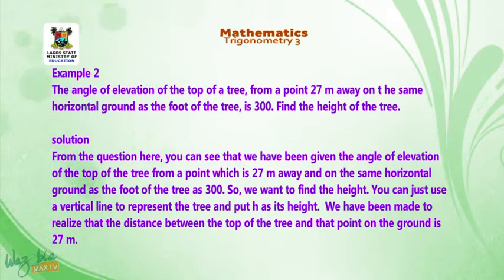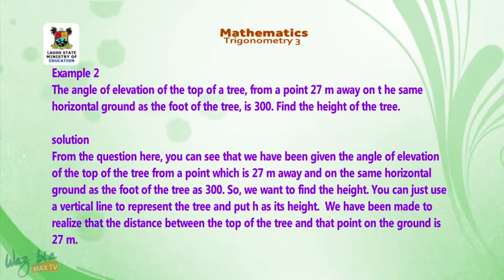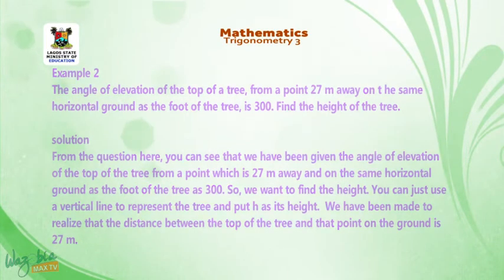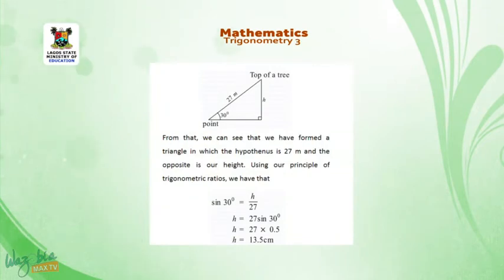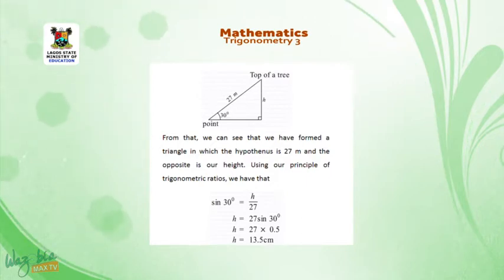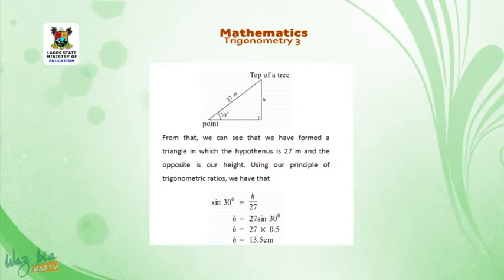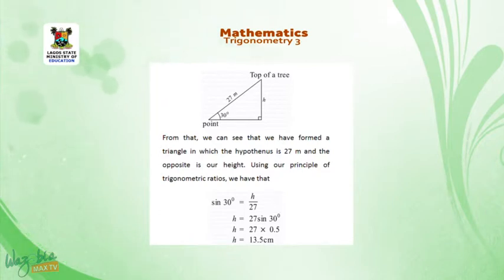We want to find the height. Use a vertical line to represent the tree and put h as its height. The distance between the foot of the tree and that point on the ground is 27 meters. From that, we can see we have formed a triangle in which the hypotenuse is 27 meters and the opposite is our height h. Using our principle of trig ratios, sin 30° = h/27. So h equals 27 × sin 30° = 27 × 0.5, and h is 13.5 meters. The height of the tree is therefore 13.5 meters.